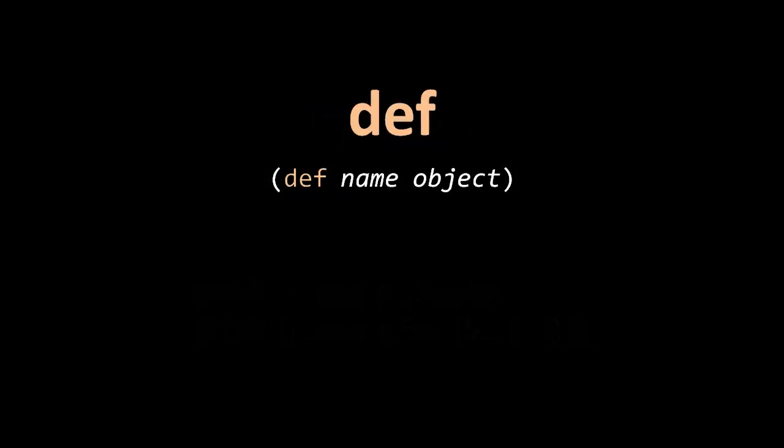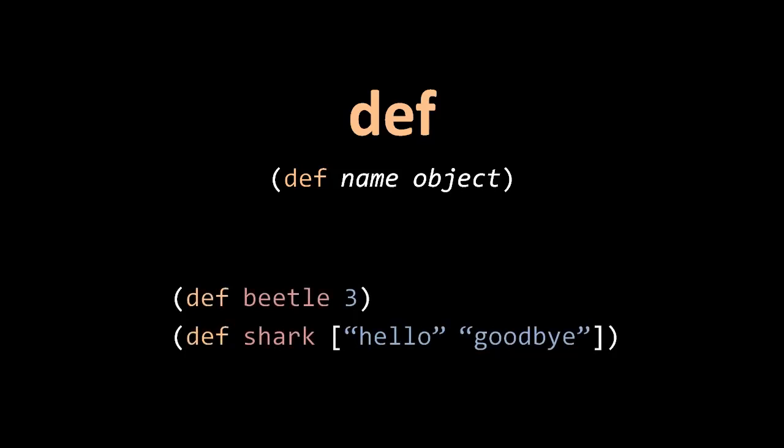The def special form is what we use to create or modify symbol var mappings in the current namespace. First you specify the name, a symbol, and then you specify the object which is going to be stored in the var mapped to that symbol. So in this top example here, we are creating a symbol var mapping of the symbol beetle to some var containing the object three. If the current namespace already had a symbol var mapping with the symbol beetle, then what this does is it modifies that var so that it contains this object and not whatever it had before.